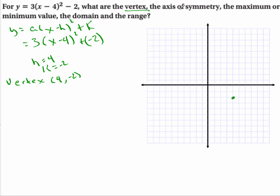What is the axis of symmetry? Well, the axis of symmetry is always x = 4. What is the maximum or minimum value? Now, this is going to be an upward facing parabola, so it's going to go up like this. So I'm going to have a minimum at x = 4, and the minimum value is -2.